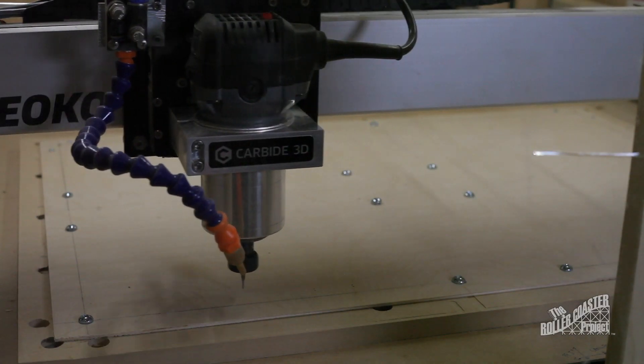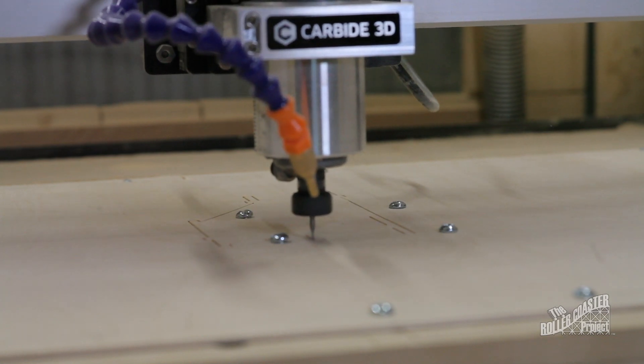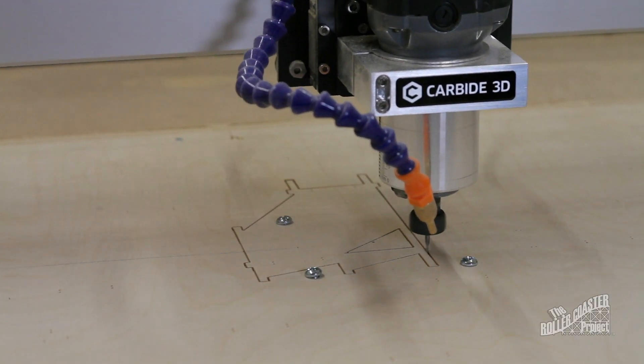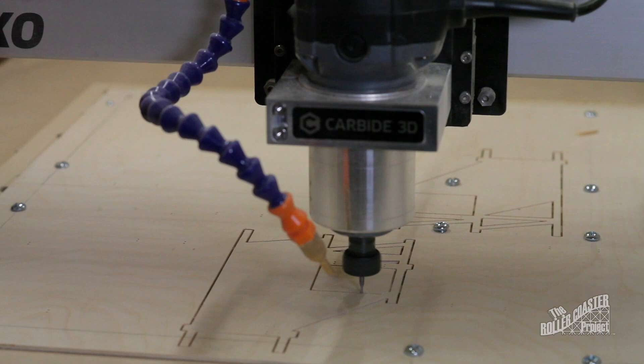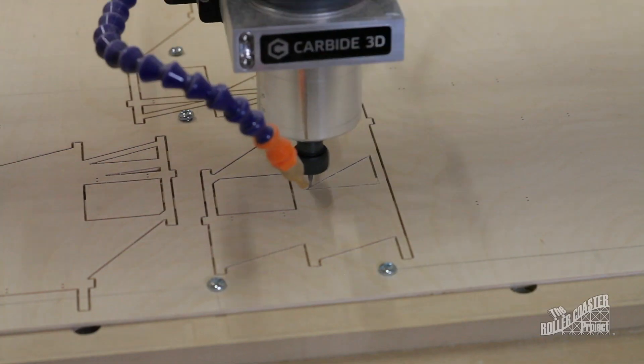With the machine zeroed and the correct tool installed, it's time to cut the next few sections. I'm using what's called a down cut end mill to reduce any uplifting force as I machine the thin wood material.